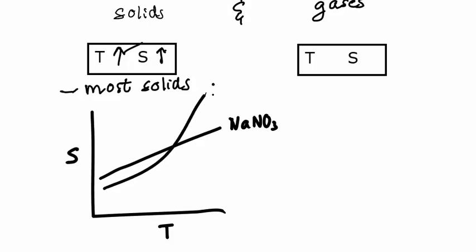Something like sodium nitrate, it's positive. Potassium nitrate is also positive, although not the same shape. KBr, potassium bromide, also positive. Most substances will have a positive change in solubility for temperature.